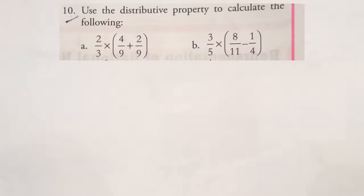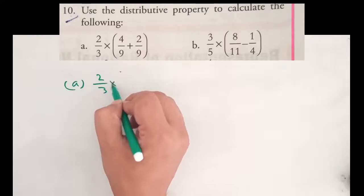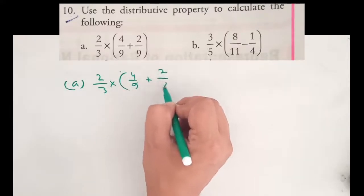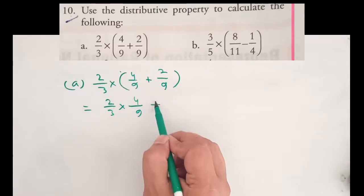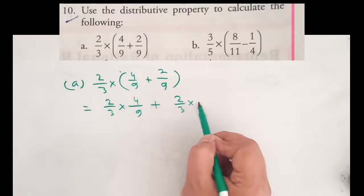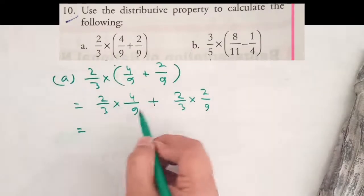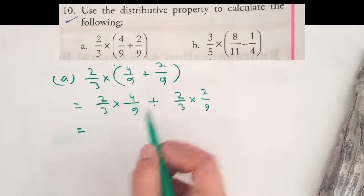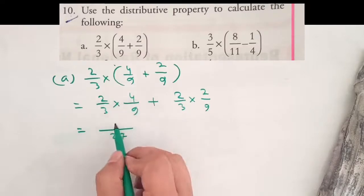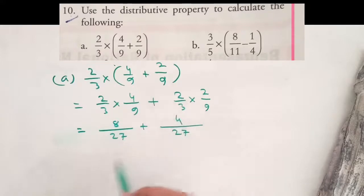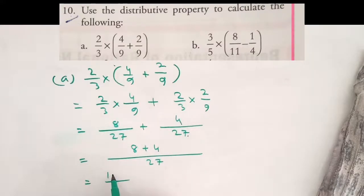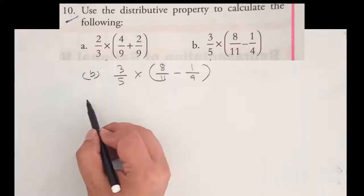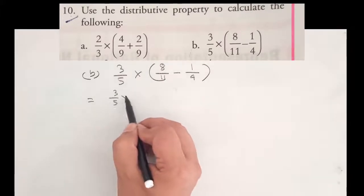Question 10: Use the distributive property to calculate the following. Part A: 2 by 3 into bracket 4 by 9 plus 2 by 9. We distribute 2 by 3 into each term: 2 by 3 into 4 by 9, then cancel numerator and denominator. The denominator is the same, so the answer is 8 plus 4 equals 12 by 27, which simplifies to 4 by 9.